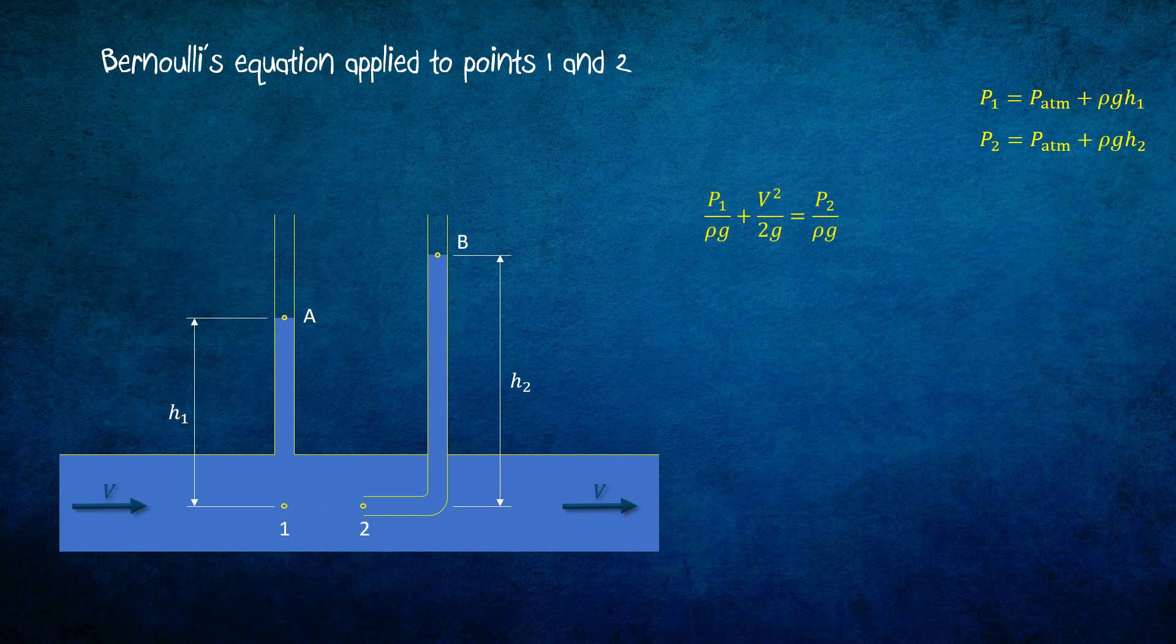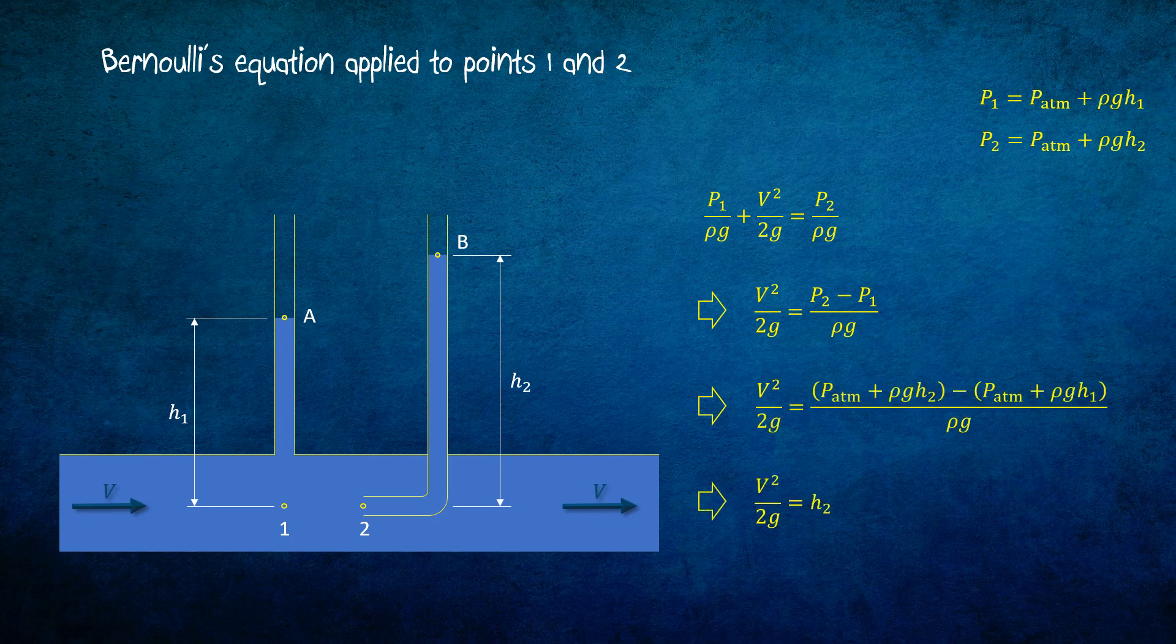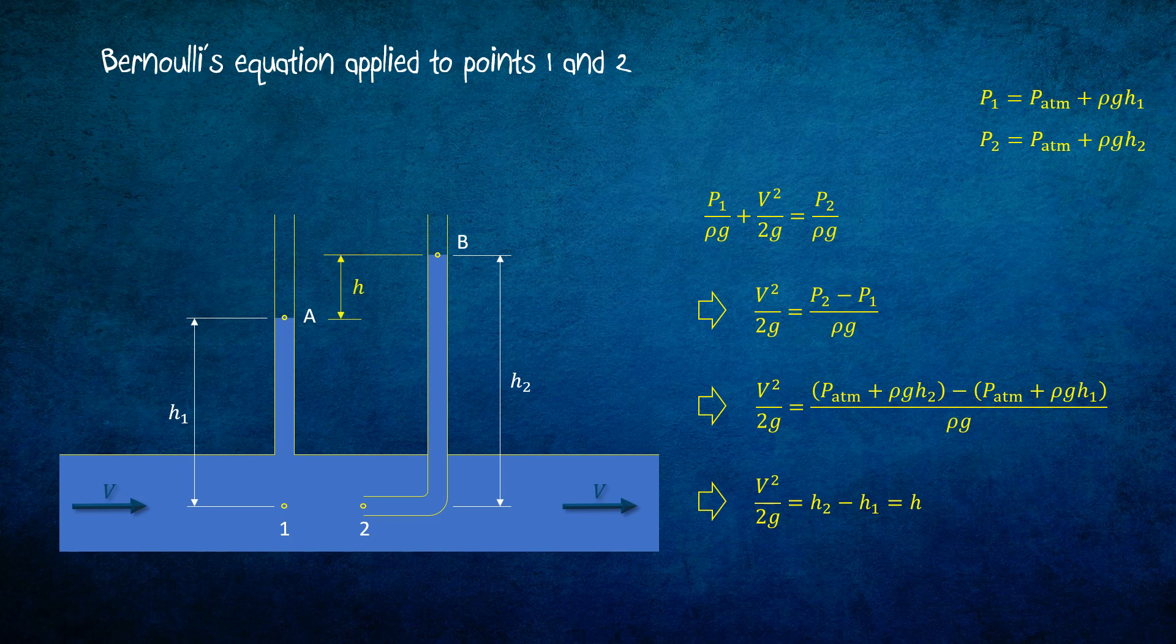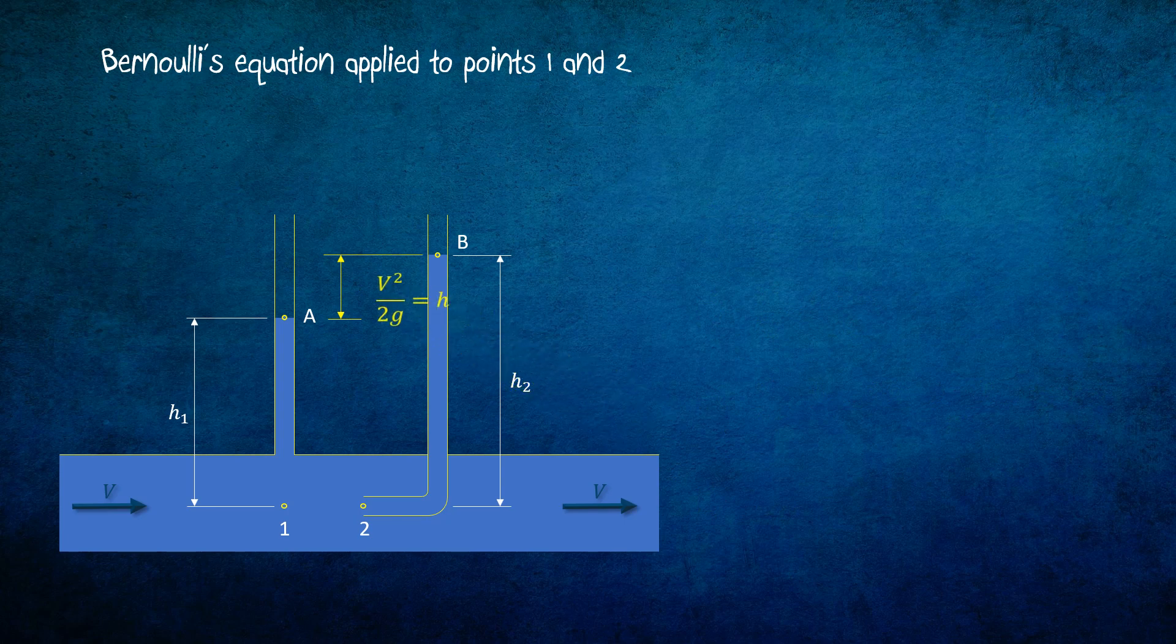Here the Bernoulli's equation has been simplified. By rearranging the equation and substituting P1 and P2, we obtain the expression of V squared over 2g, which is the difference between H2 and H1. Let's name it H. Hence the velocity of the flow is equal to the square root of 2gh.